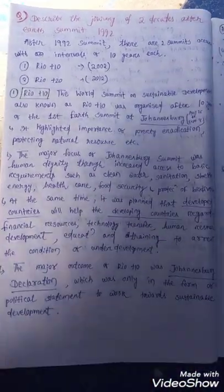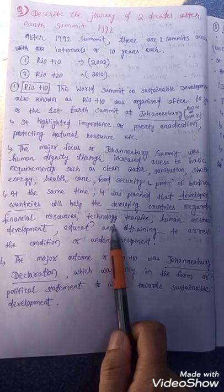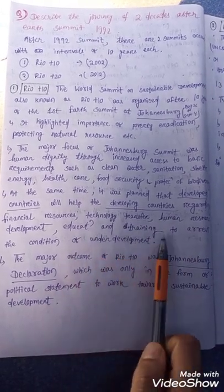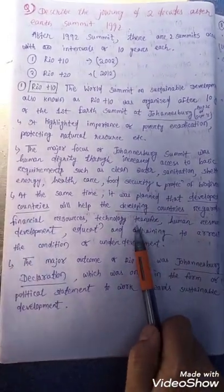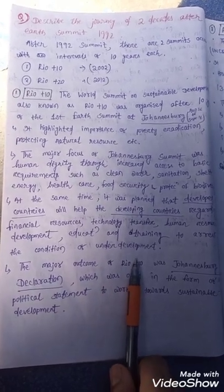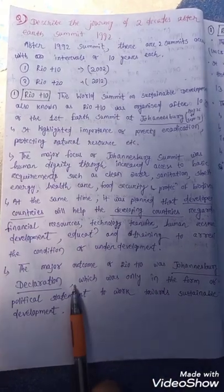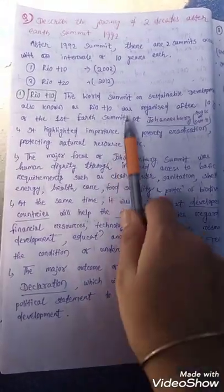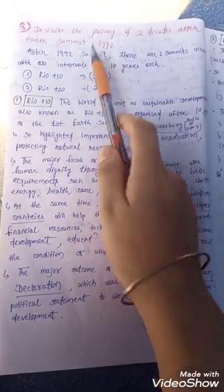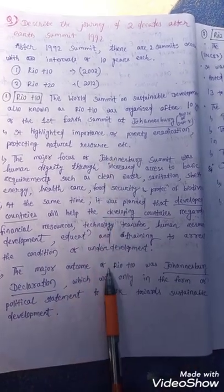At Rio+10, it was planned that developed countries would help developing countries regarding financial resources, technology transfer, human resource development, education, and training to address the condition of underdevelopment. The major outcome of Rio+10 was the Johannesburg Declaration, which was only in the form of a political statement to work towards sustainable development.